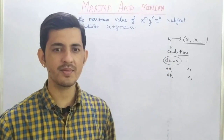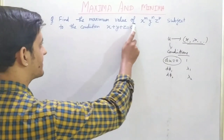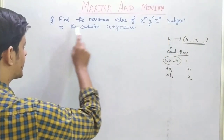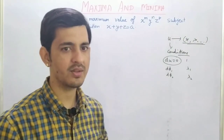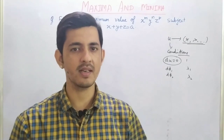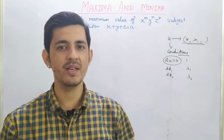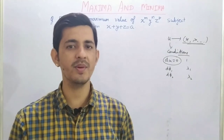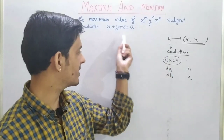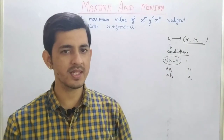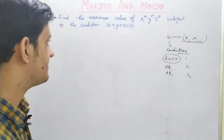A stationary point is a point where the function u will either be maximum or minimum. If you had to find a condition, you substituted the lambda value into any condition and got the required condition. Today's video will follow the same steps, but let's see what the condition is in this question. We have to find the maximum value of the given function subject to a given condition.